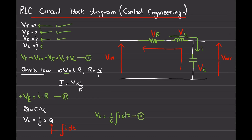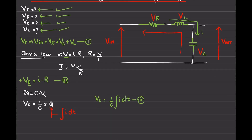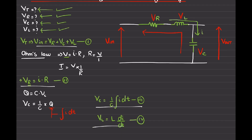Now for our final equation: finding the voltage across the inductor. VL equals the inductance L in Henrys times the derivative of current with respect to time, di/dt. That gives us the voltage across the inductor. We now have all four necessary equations — VT (equation 1), VR (equation 2), VC (equation 3), and VL (equation 4) — which are more than enough to draw the block diagram.